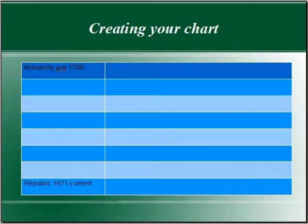Your final product will look something like this. You'll need to create a chart that starts with the monarchy starting pre-1700 — these were the Bourbons, the Bourbon monarchy — and ending with a republic. During World War II we had the Vichy French, but we're not going to get into that. For our purposes, we're going to stop at the 1871 republic.